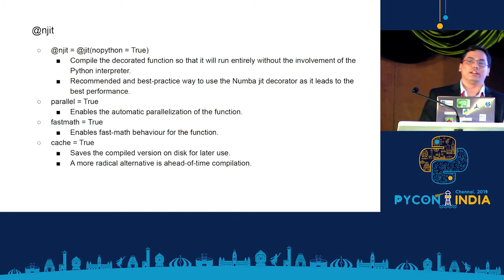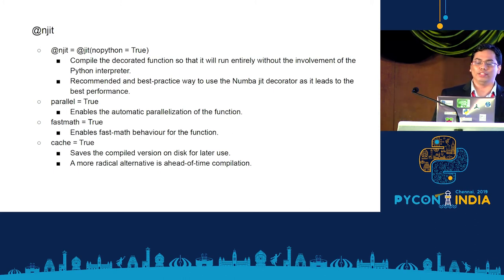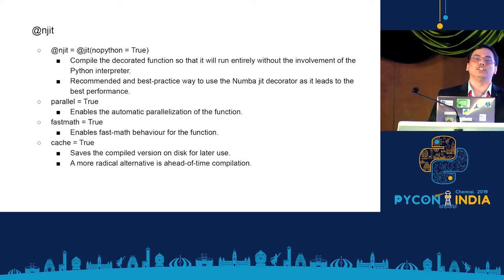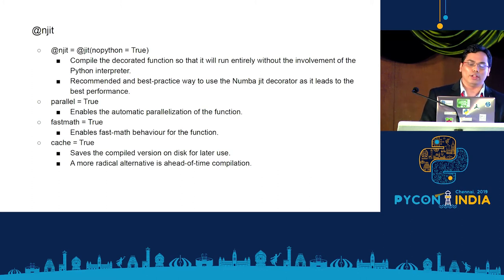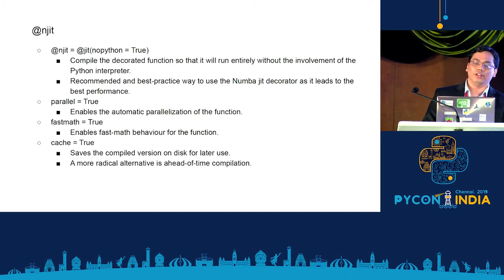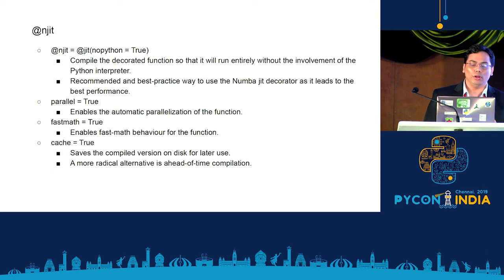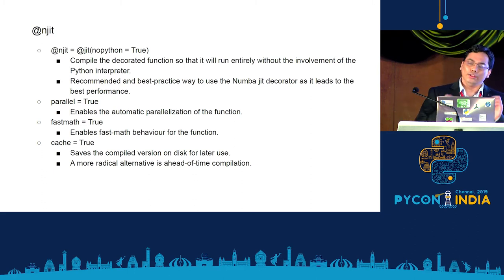The njit decorator is essentially the jit decorator with the attribute 'nopython=True'. This means you do not want any involvement of the Python interpreter, which is necessary for good performance — so by default, try to use the njit decorator. You also have other function arguments like 'parallel', which will automatically parallelize code execution based on your system; 'fastmath', which skips some checks for mathematical calculations to speed up your code; and 'cache=True', which saves your compiled code to disk so you save that compilation time on subsequent runs. There is also an ahead-of-time compilation alternative.